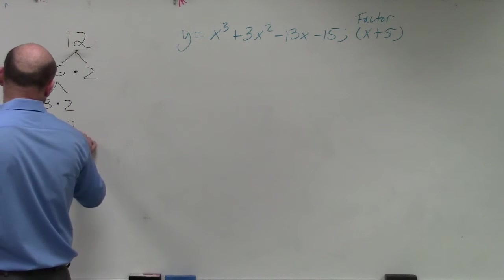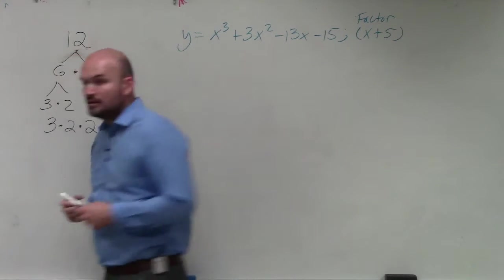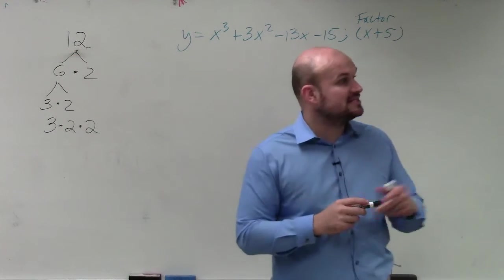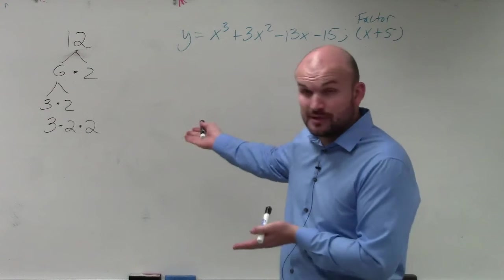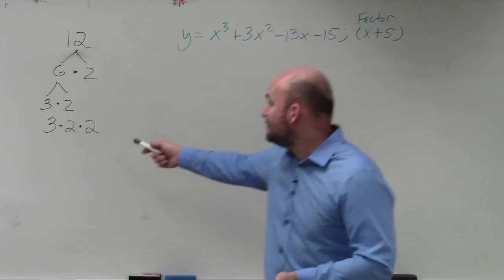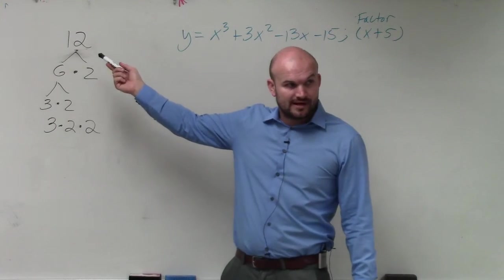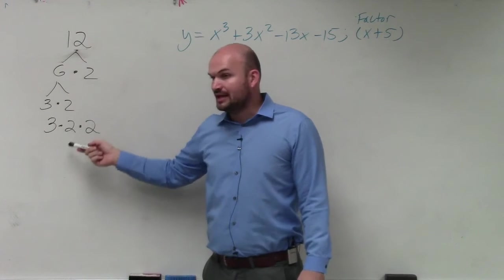So factoring a number completely, 3 times 2 times 2, is a list of the prime factors of 12. Do you guys agree with me those are all factors? Yes. And the product of them still gives you 12, right? So this is factoring completely a number.